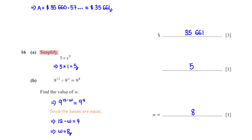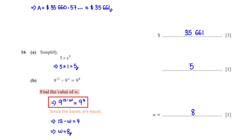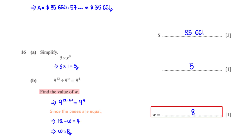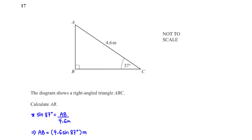Simplify 5 × x⁰. Any number raised to the power zero equals 1, so x⁰ = 1 and 5 × 1 = 5. Next, 9¹² ÷ 9^w = 9⁴. Since the bases are the same, we subtract powers: 12 − w = 4. Making w the subject gives w = 8.